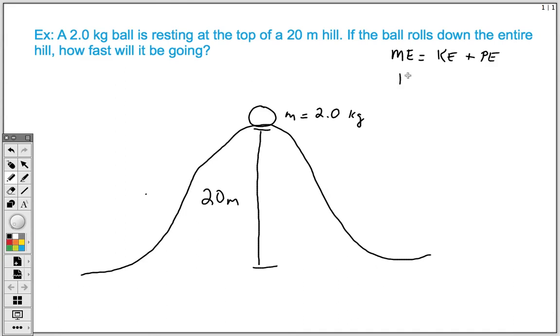And our two equations in this equation is our kinetic energy, which is one-half the object's mass times its velocity squared. And then our potential energy, which is the object's mass times gravity times the height.